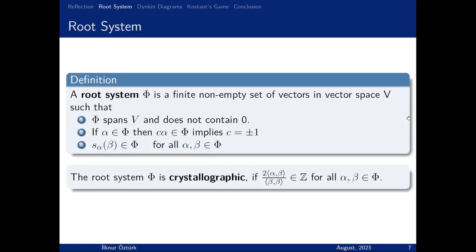Let's look at the formal definition. We represent a root system with Φ. A root system Φ is a finite non-empty set of vectors. Φ spans V, where V is a vector space that Φ lives in, and does not contain zero. If α is in Φ, then minus α must be in Φ, and the only multiple of α is minus α. And Φ is closed under reflection.